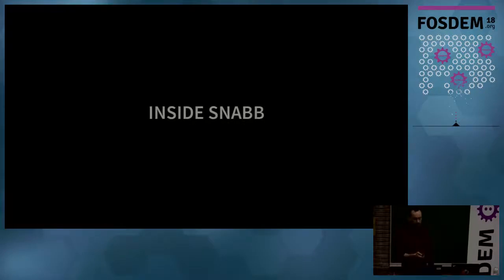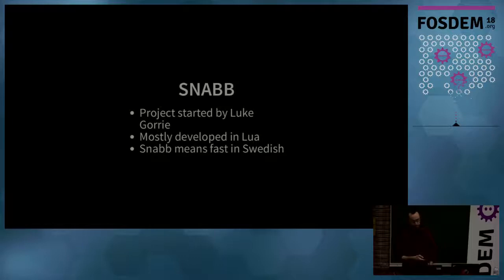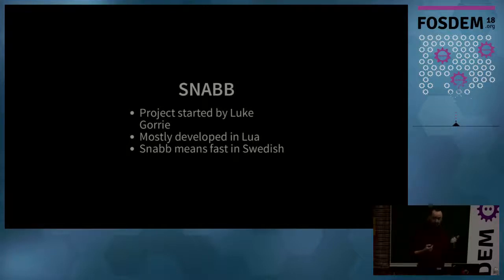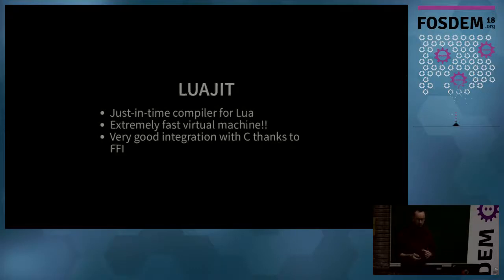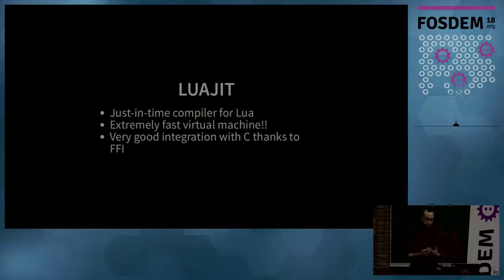SNAP is a project that started in 2012 by Luke Gorrie. It's mostly developed in Lua, and SNAP actually means 'fast' in Swedish. SNAP is fast because it uses kernel bypass, because network functions are written in Lua which is faster to develop than C, and because it runs on top of LuaJIT — a just-in-time compiler regarded as one of the fastest virtual machines available. LuaJIT also has excellent C integration via its foreign function interface.